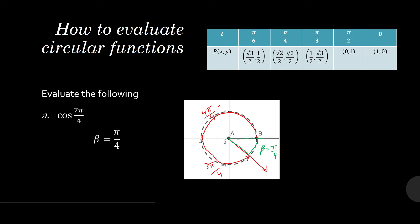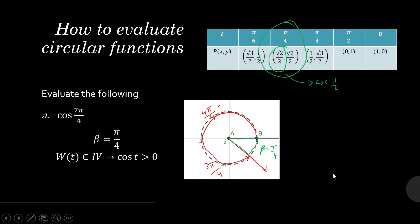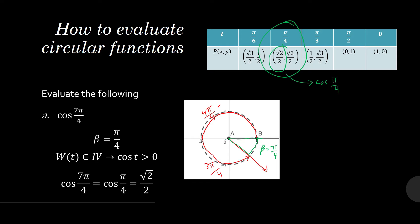The purpose of knowing the reference angle is to know which corresponding point to use. Because we are talking about the cosine function, the cosine of π/4 is the x-coordinate of the corresponding point. Since our point is in the fourth quadrant, our cosine function is positive. So cosine of 7π/4 equals cosine of π/4, which is √2/2, and the sign is positive.